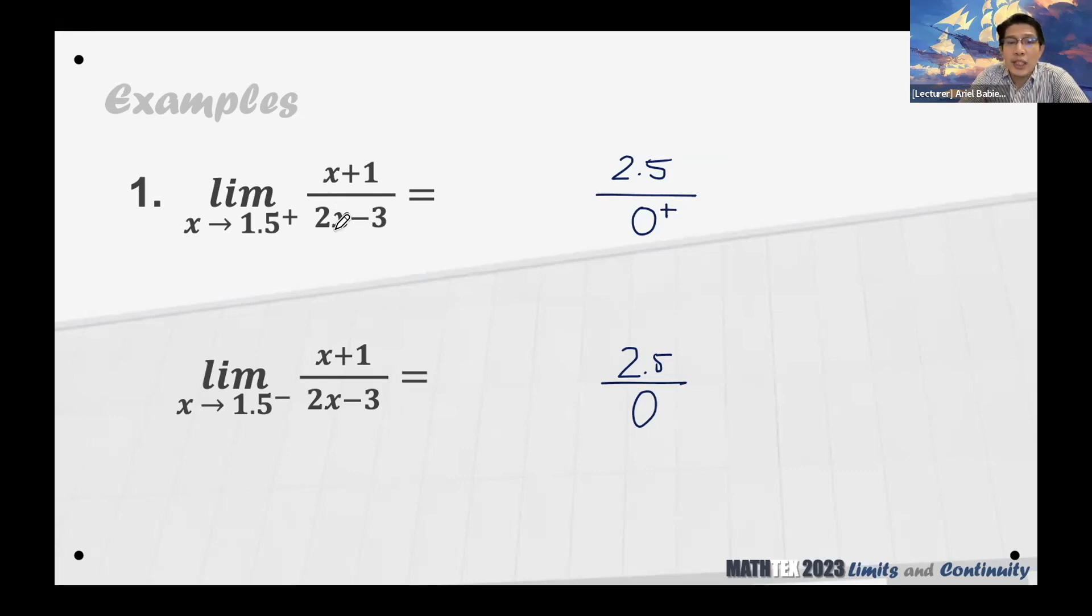Greater than 3 minus 3 will give us a positive value. Meaning that the denominator, 2x minus 3, approaches 0 from positive values. Why positive values? Again, it's because...